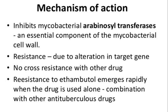For tuberculous meningitis: 50 mg/kg twice weekly dose schedule. Adverse reactions: retrobulbar neuritis — at 25 mg/kg per day continued for several months, loss of visual acuity and red-green color blindness can occur. At 15 mg/kg per day or less, visual disturbances are very rare. Ethambutol is contraindicated in children too young to permit assessment of visual acuity and red-green color discrimination.